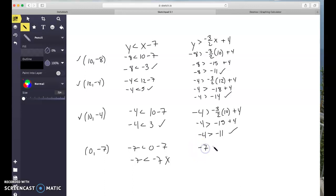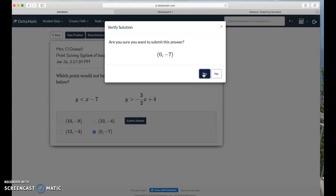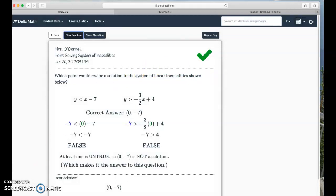Negative 7 is greater than negative 3 halves times 0 plus 4. Let's see here. 0 times 3 halves is 0 plus 4 is 4. Negative 7 is also not greater than 4. Okay, but it only had to fail one of the two inequalities for it to not be part of the solution. But in this case, it looks like it failed both. So our answer here would be 0 negative 7 is not the solution. All right, huzzah! Delta math liked it.